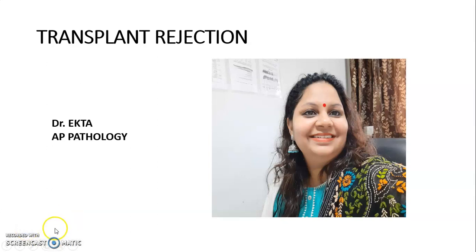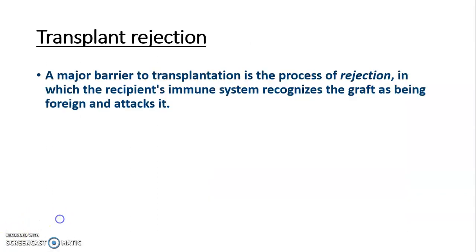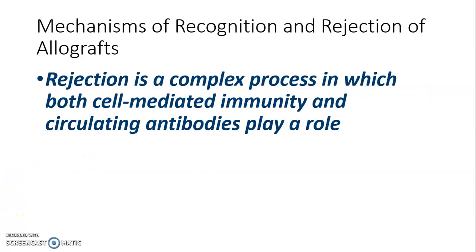We are going to discuss Transplant Rejection. Transplant rejection is a major barrier to transplantation in which the patient's immune system recognizes the graft as foreign and attacks it. Rejection is a complex process in which both cell-mediated immunity and circulating antibodies play a role.